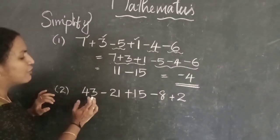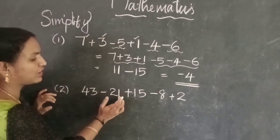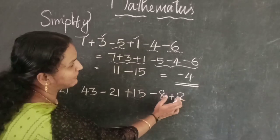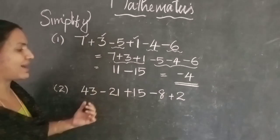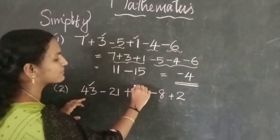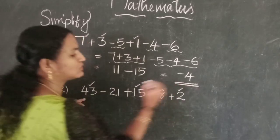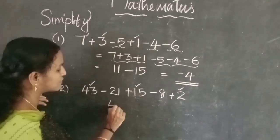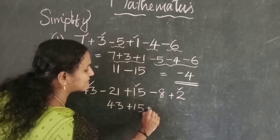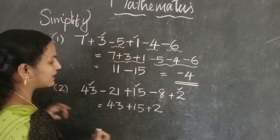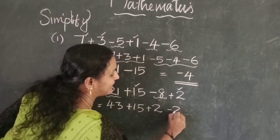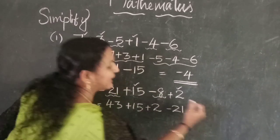One more example: 43 minus 21 plus 50 minus 8 plus 2. First write the numbers according to sign. The positive numbers are 43, 50, and 2: write 43 plus 50 plus 2. The negative numbers are minus 21 and minus 8: write minus 21 minus 8.